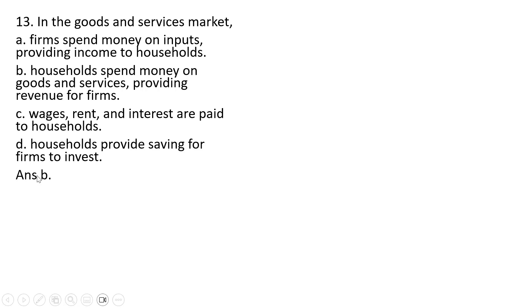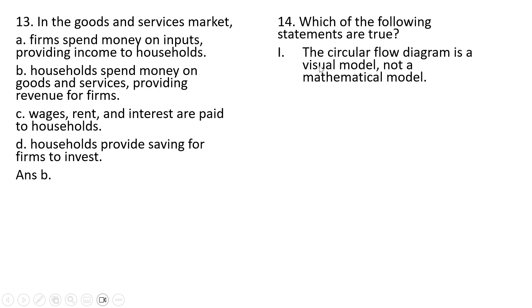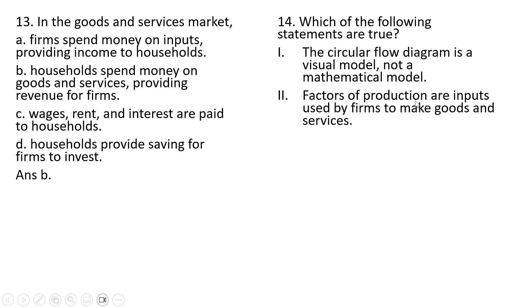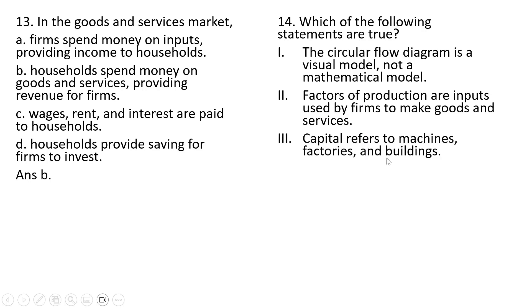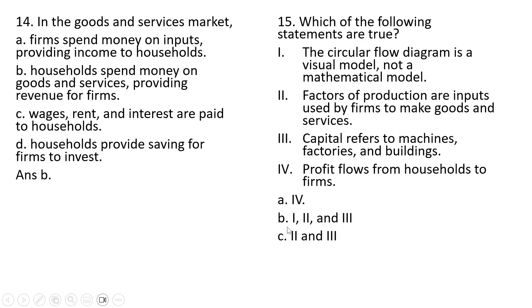Question 13: The correct answer is B. Question 14: Which of the following statements are true? Statement 1 — the circular flow diagram is a visual model, not a mathematical model — that is correct. Factors of production are inputs used by firms to make goods and services — that is correct. Capital refers to machines, factories, and buildings — that is correct. Statement 4 — profit flows from households to firms — that is incorrect; it's the other way around. Since people and households are the owners of firms, profit flows from firms to households. So the correct answer is B: statements 1, 2, and 3 are true; statement 4 is false.